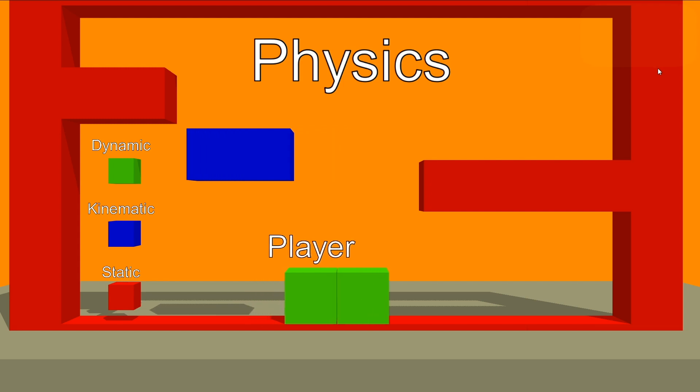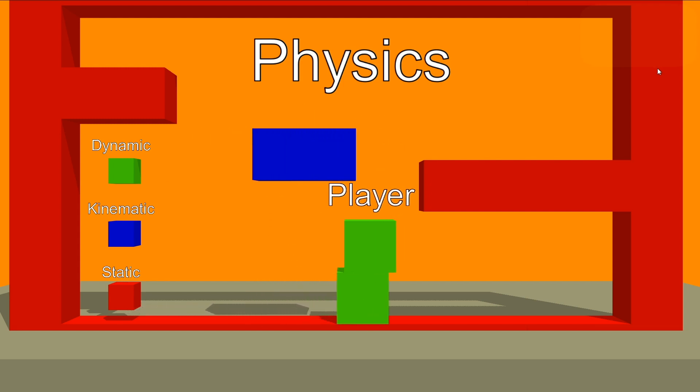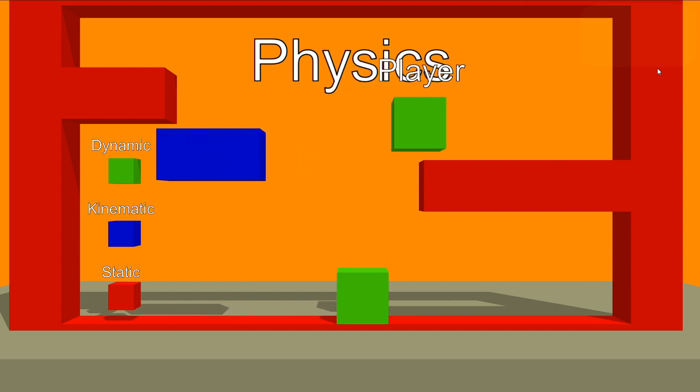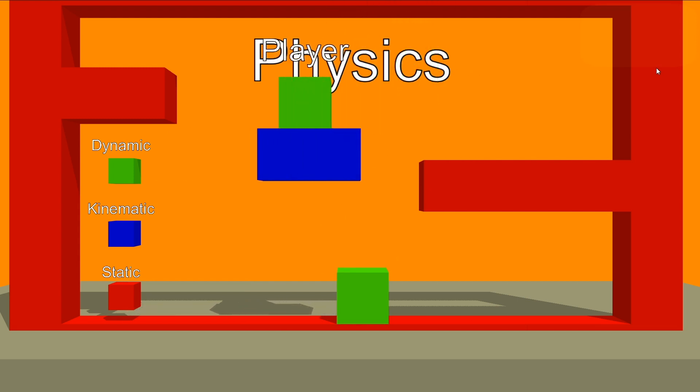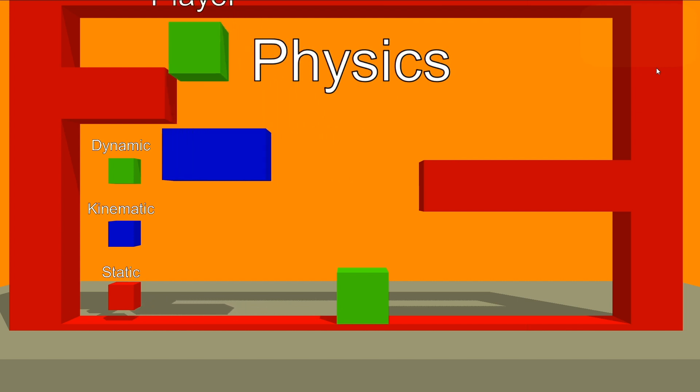A moving player that has to move a box so he can jump far enough to get on top of the platform. And this is an example of how you use three types of physics to create a gameplay.